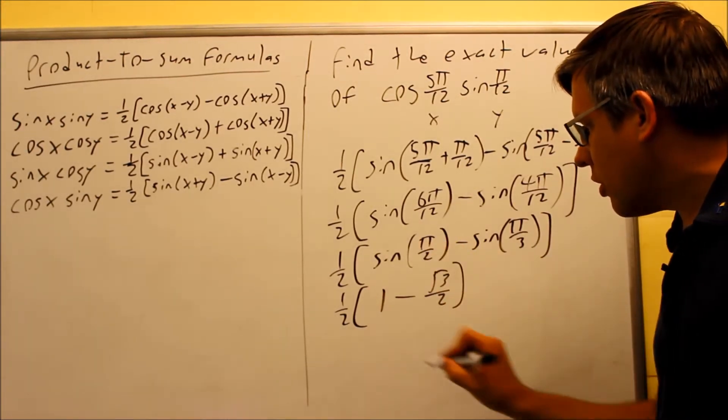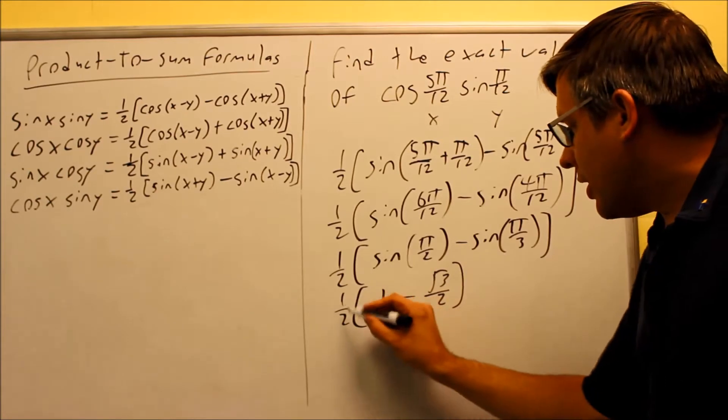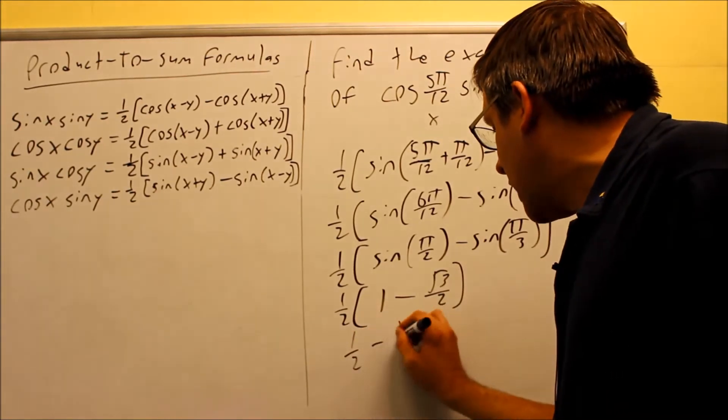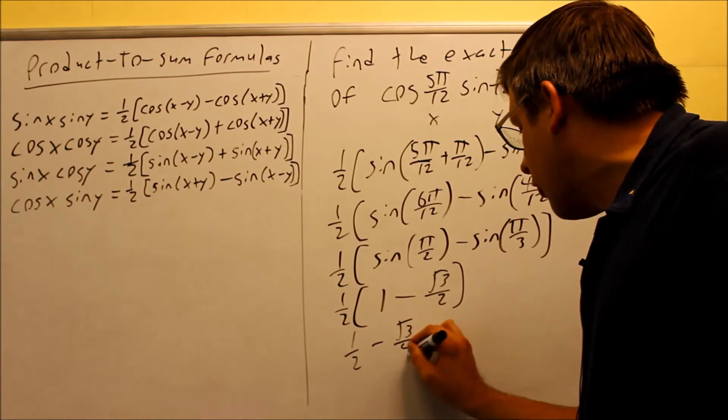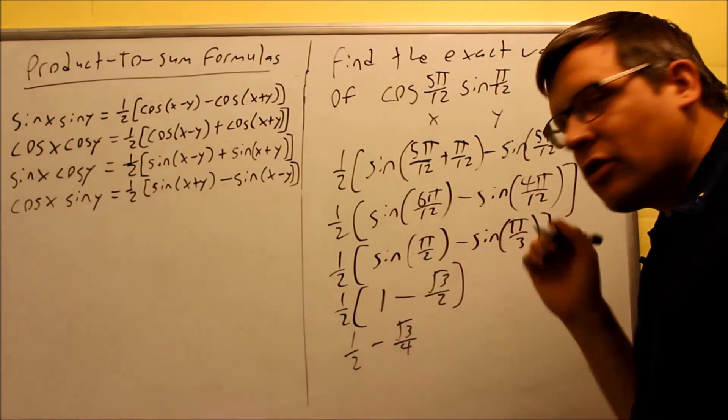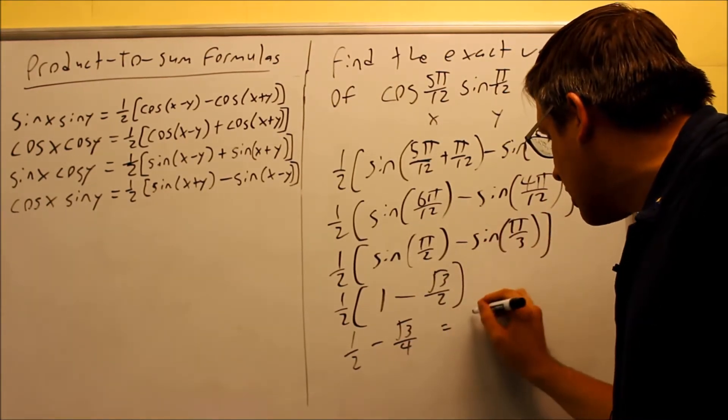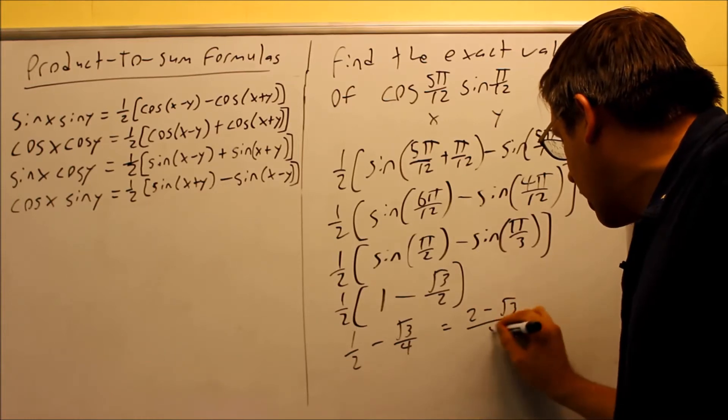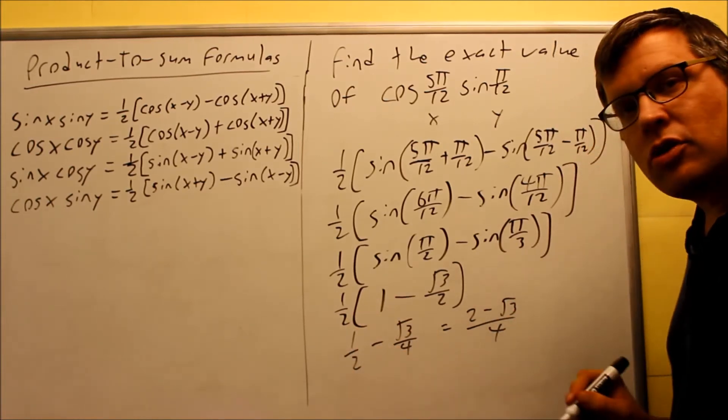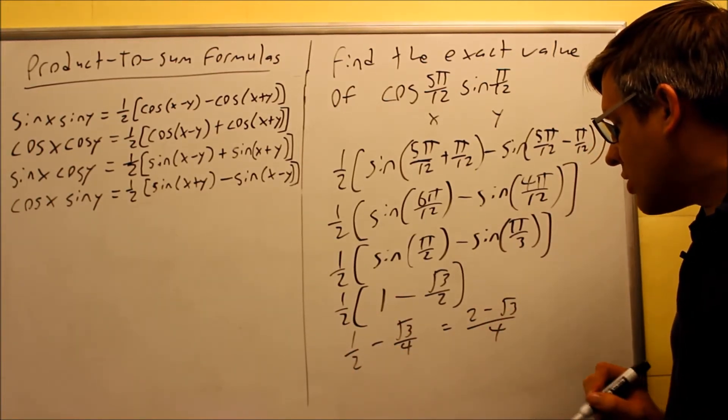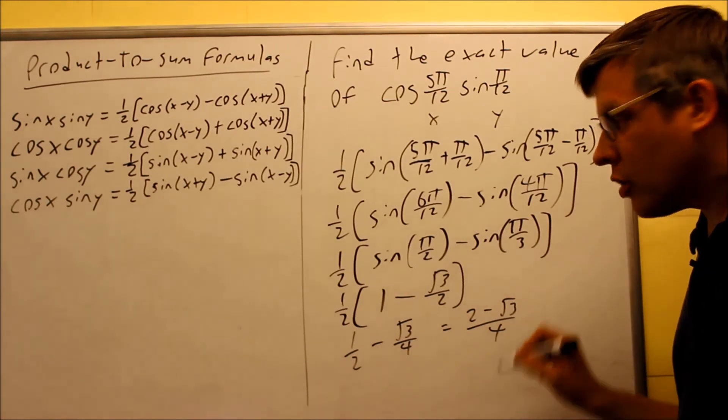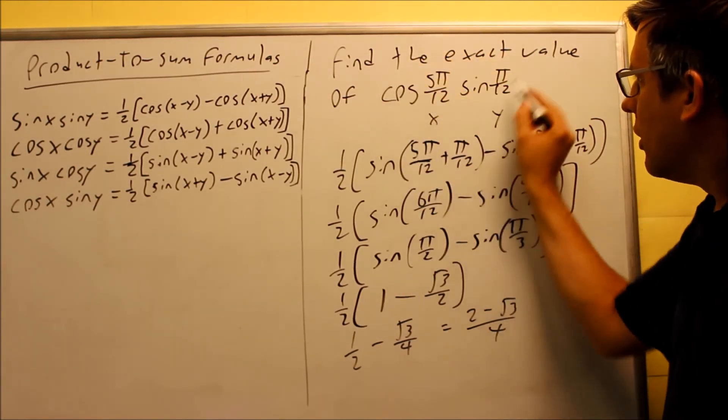So this is going to be your exact value. You can multiply through by 1/2: 1/2 minus √3/4. You can either leave your answer like that, or if you want common denominators, multiply this by 2/2, then you would get 2 minus √3 over 4. That would be the exact value for this product.